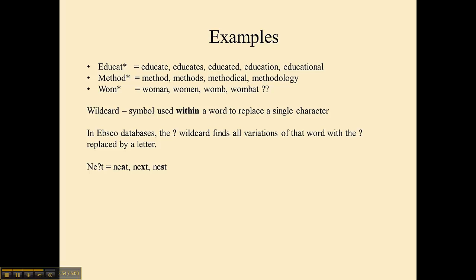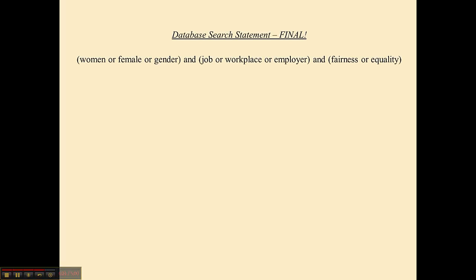So with any word, I can replace any letter with this wild card and it will search for whatever word meets those letters with that mystery symbol in it. For example, N-E wild card T will find neat, next, or nest — N-E, then any letter, then T. So in our database search statement, which so far looks like this, I apply truncation and wild cards to build my final search statement. I have taken off all the word endings and replaced them with truncation symbols, and in the case of the word women, I have removed the differing letter — W-O-M-A-N or E-N — with that wild card.